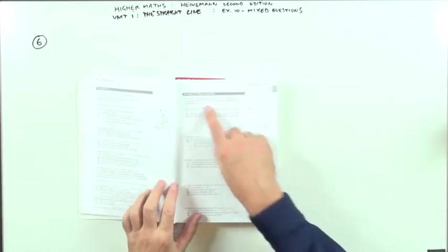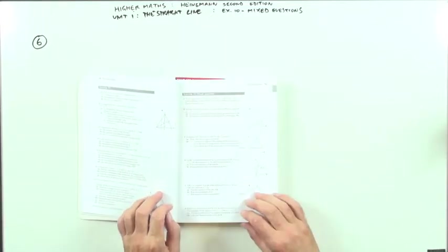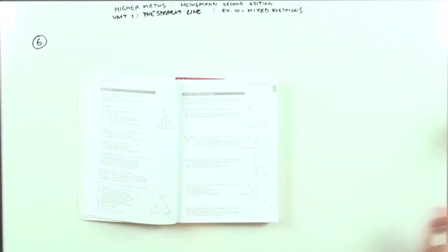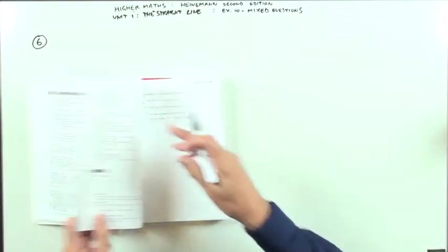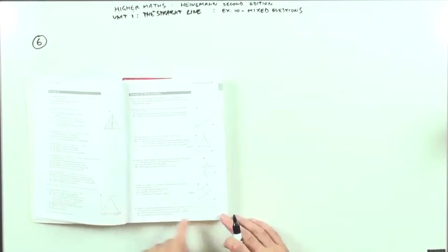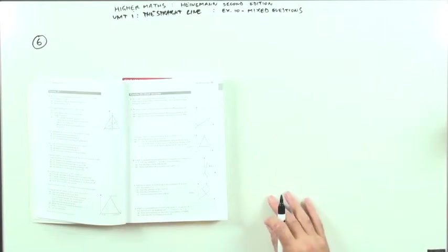Heinemann Heyer, exercise 1-0 on the straight line, question 6 this time. There's no diagram for question 6 in the textbook, but the whole of question 6 depends on your visualization of it, so a diagram would be important here.